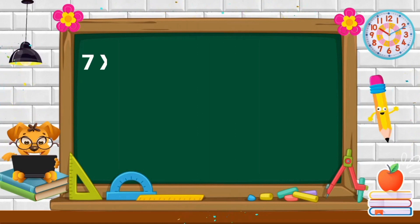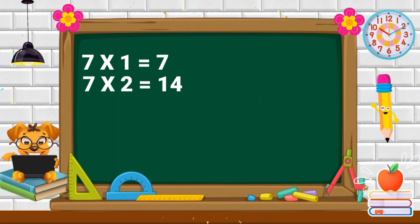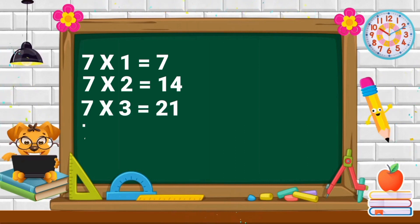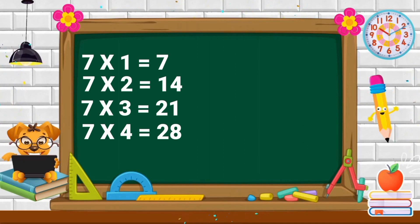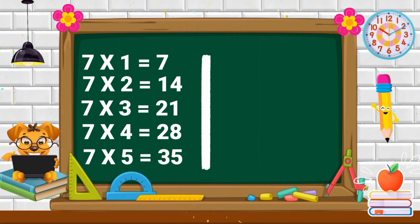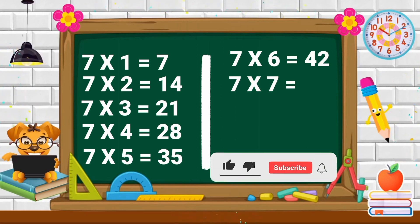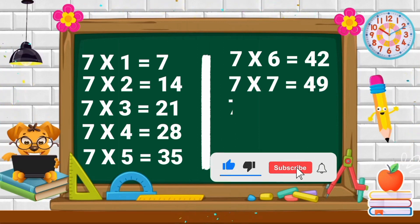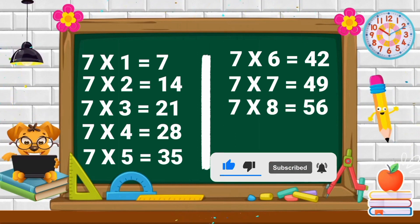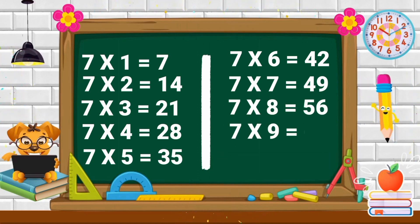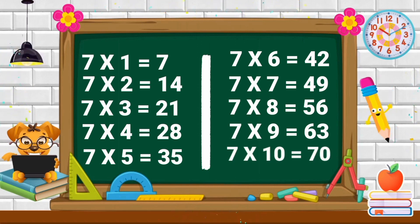Repeat again. 7 ones are 7. 7 twos are 14. 7 threes are 21. 7 fours are 28. 7 fives are 35. 7 sixes are 42. 7 sevens are 49. 7 eights are 56. 7 nines are 63. 7 tens are 70.